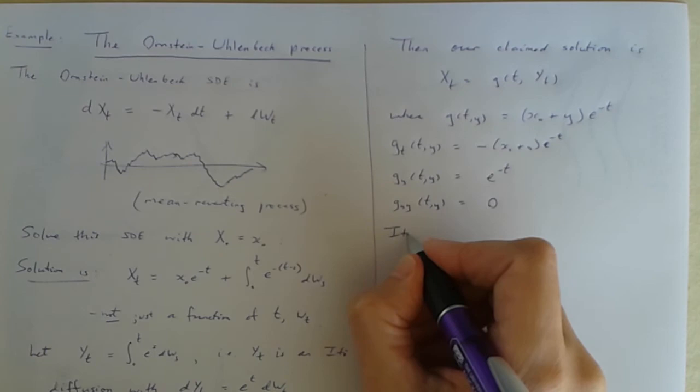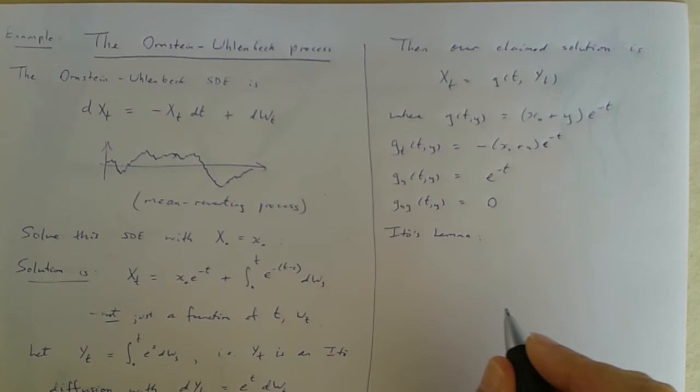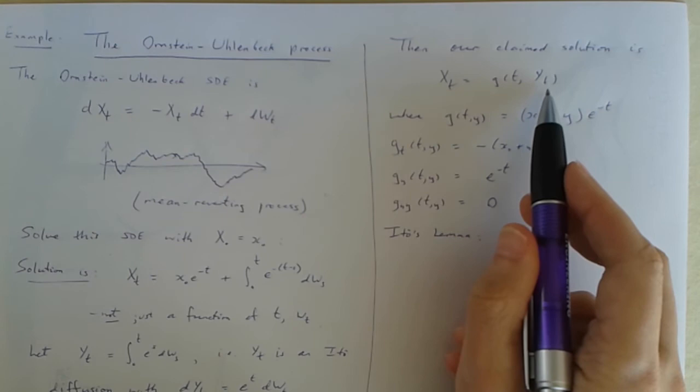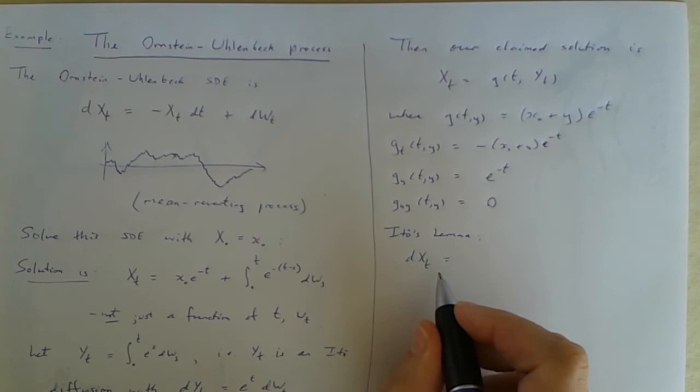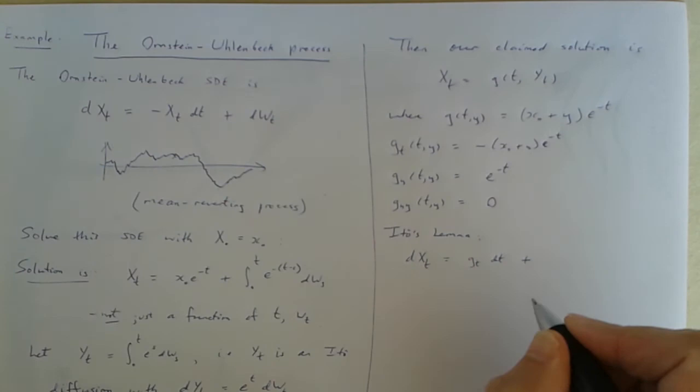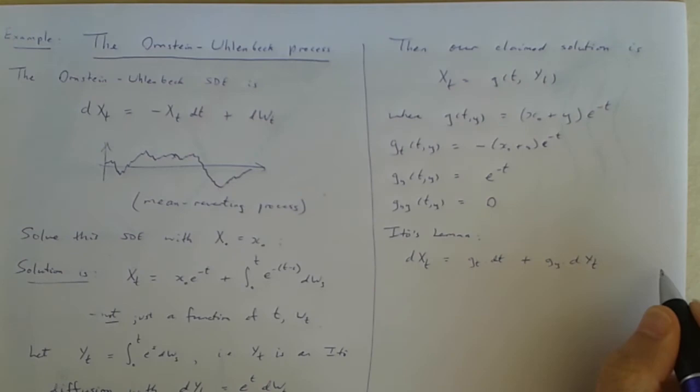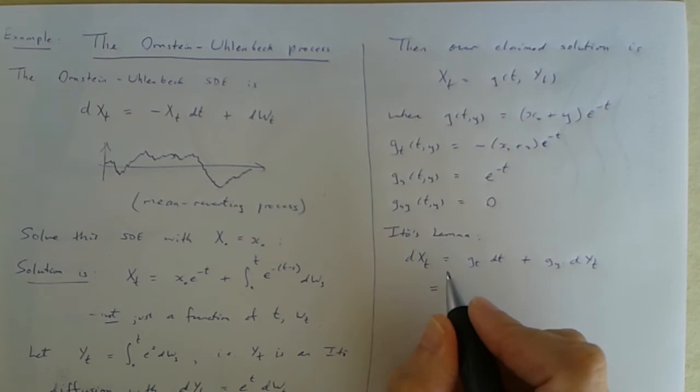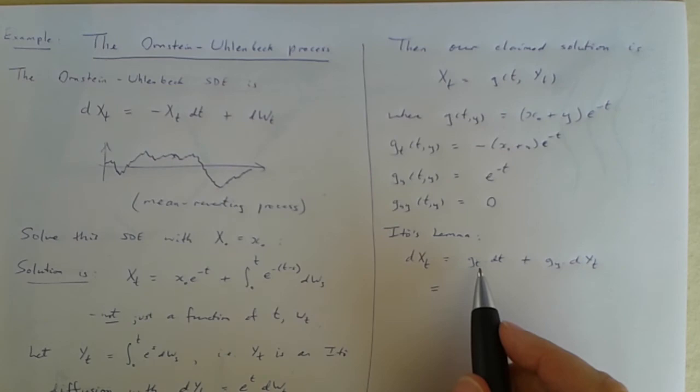Okay now let's use Ito's lemma. We're applying Ito's lemma to this xt is this function of yt. So Ito's lemma will tell us that dxt is gt dt plus g y dyt and we don't have to worry about the second derivative term.